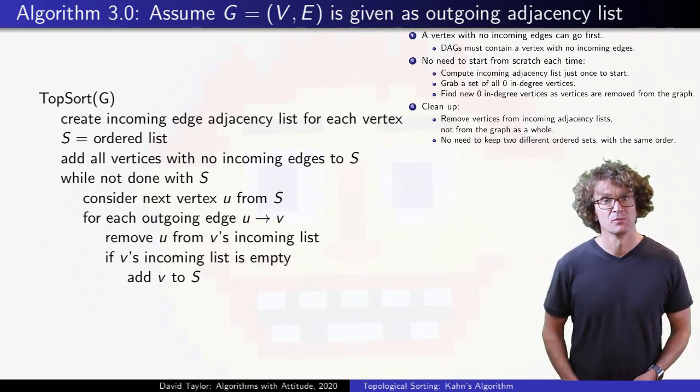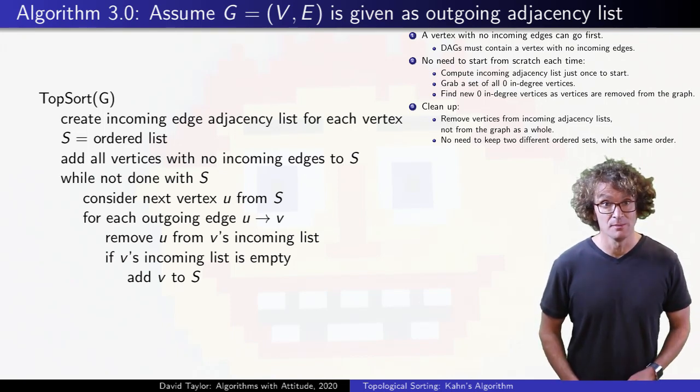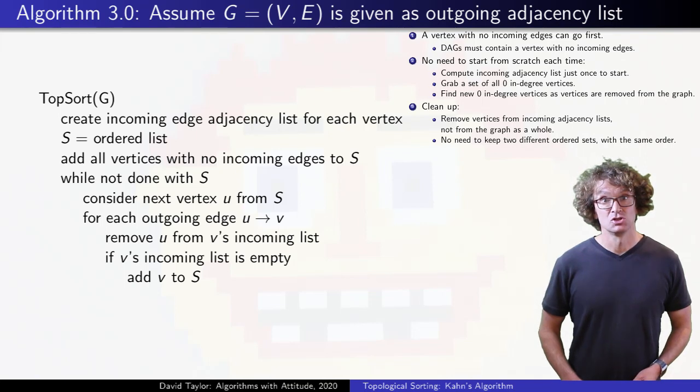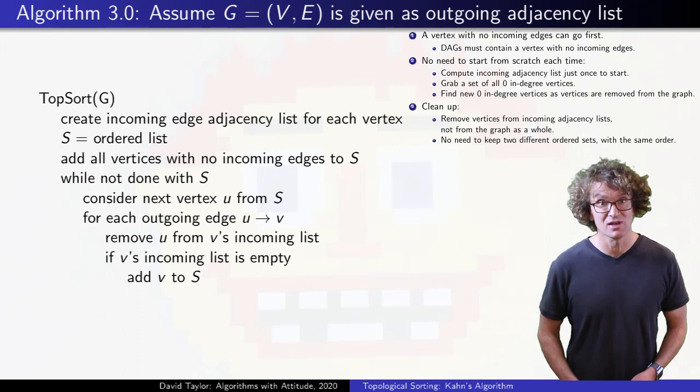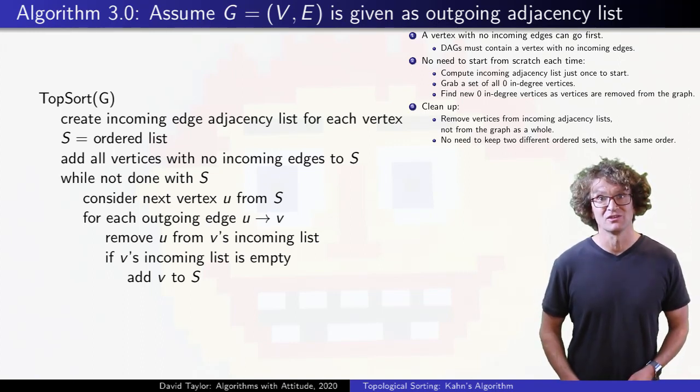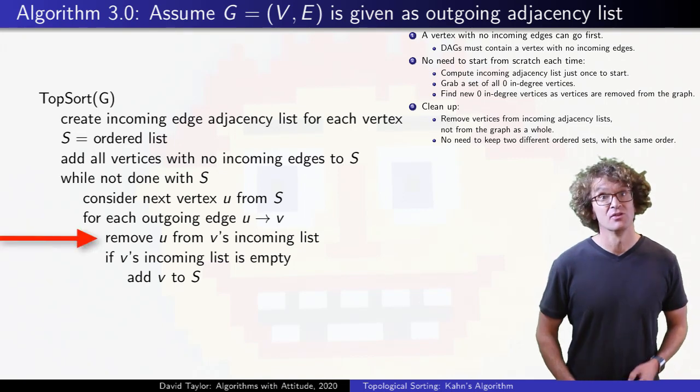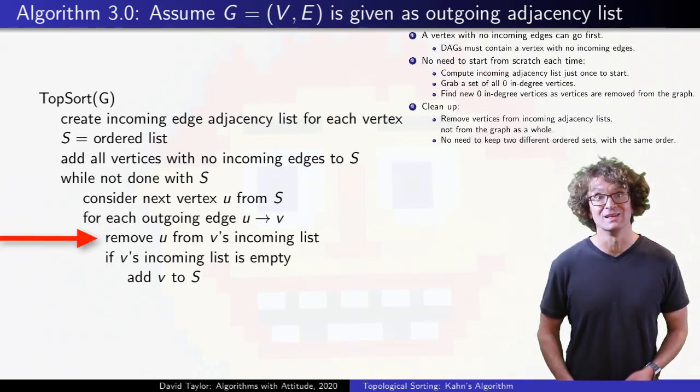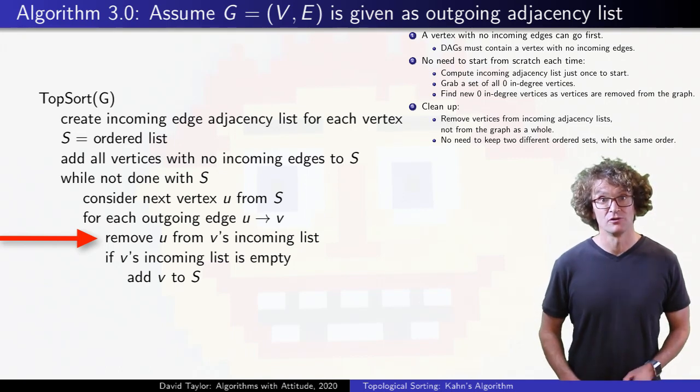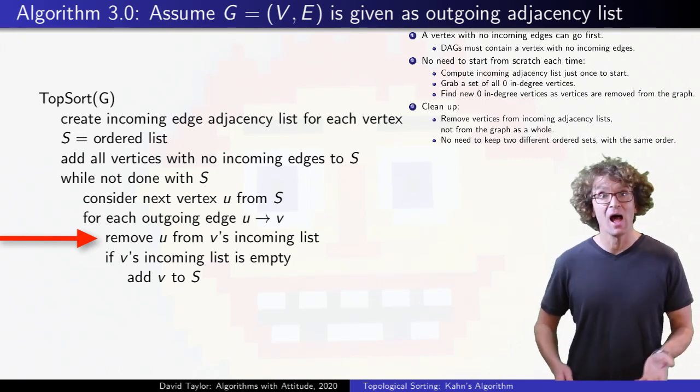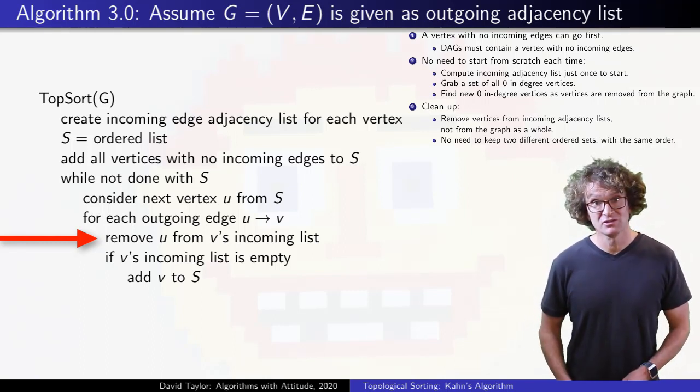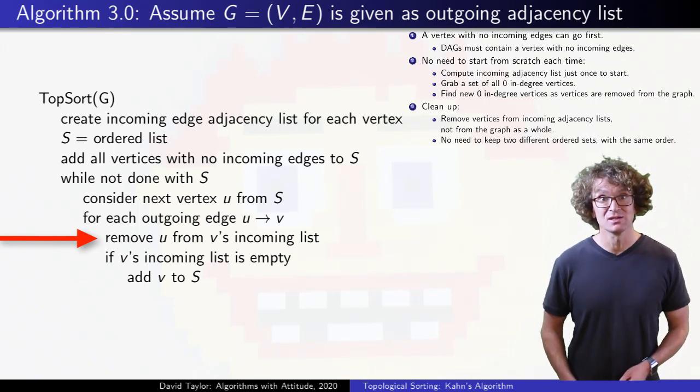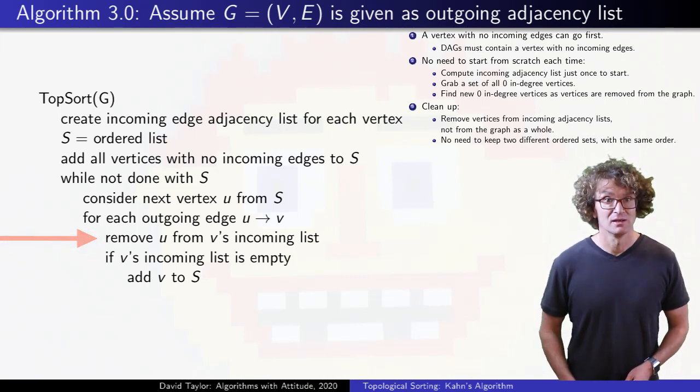How efficient is it now? The initialization stuff takes linear time, and assuming that you can add to and get the next vertex from the list in constant time, going through all vertices and edges takes linear total time, excluding the time to remove edges from the incoming lists. But that removal for each edge takes some non-constant time. It might be a bit slow. Linked lists or array lists can take linear time in the in degree, and a balanced tree would take logarithmic time. Without analyzing it exactly, can we do better?